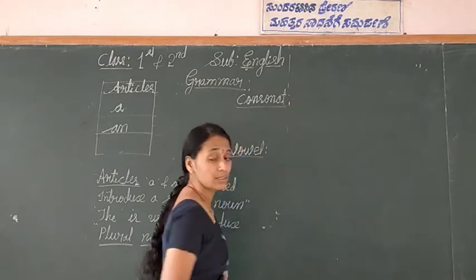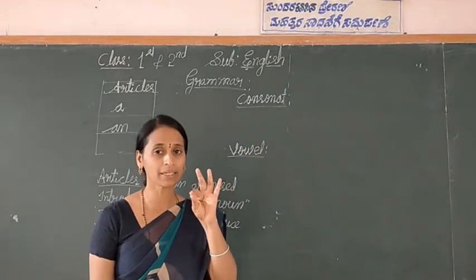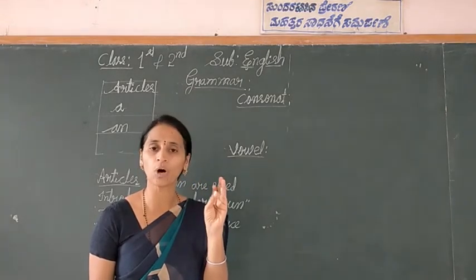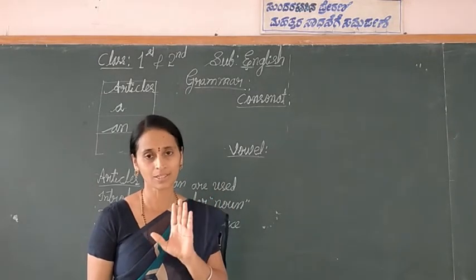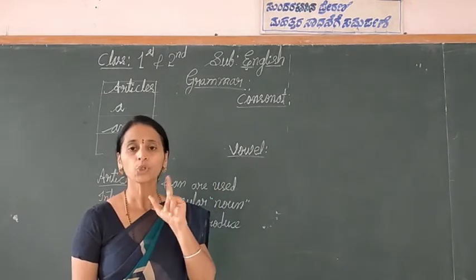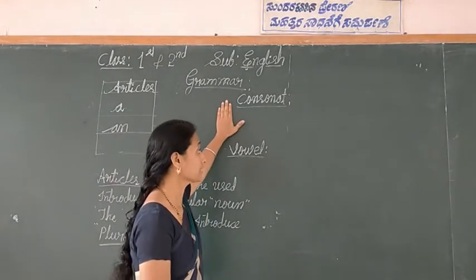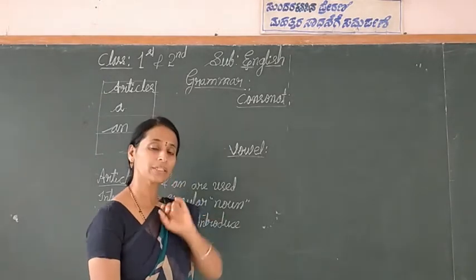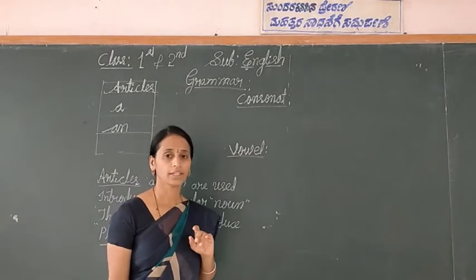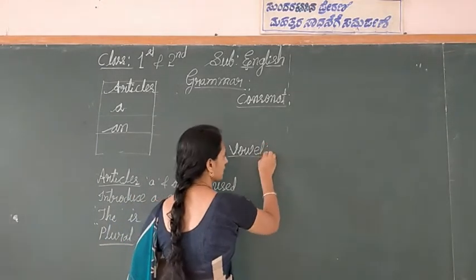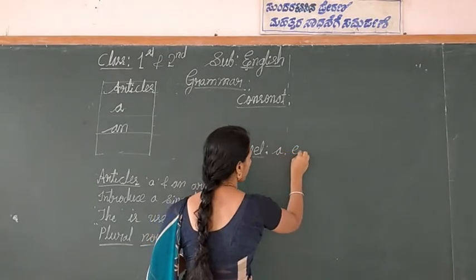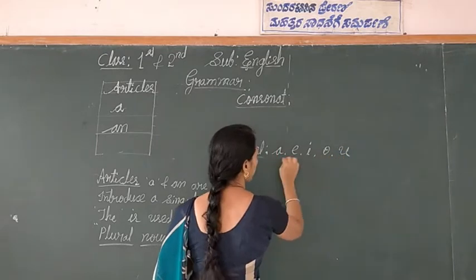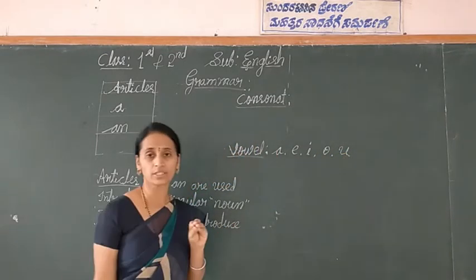Articles - alphabets are 26 letters, A to Z: A, B, C, D, E, F, G, H, I, J, K, L, M, N, O, P, Q, R, S, T, U, V, W, X, Y, Z. This is the alphabet. We divide it into two parts: one is the consonants, the second one is the vowels. The vowels are: A, E, I, O, U - that is five vowels.